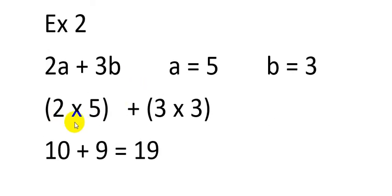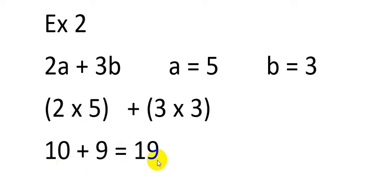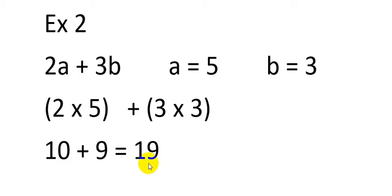2 multiplied by 5 is 10, and 3 multiplied by 3 is 9. The summation is 10 plus 9, which equals 19. So for the algebraic expression 2a plus 3b with these corresponding values, the answer is 19.